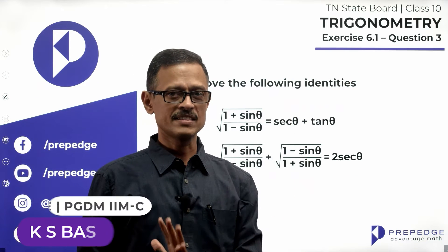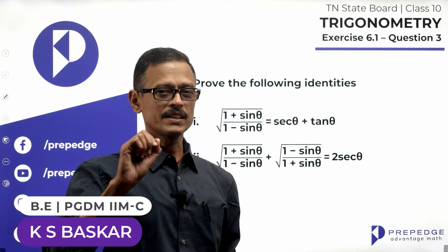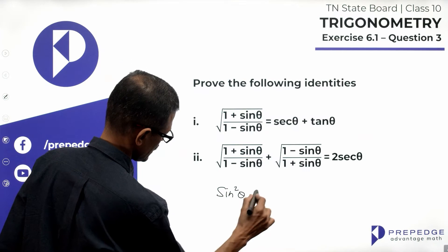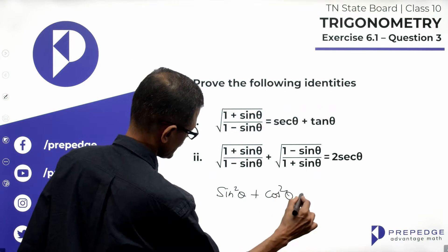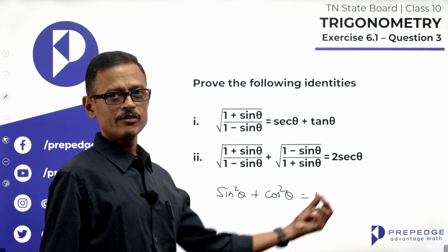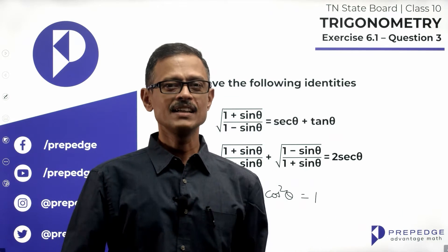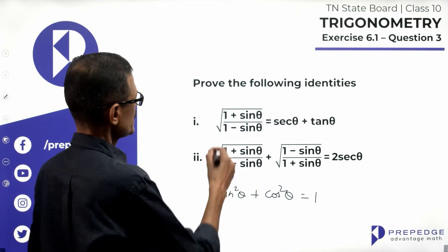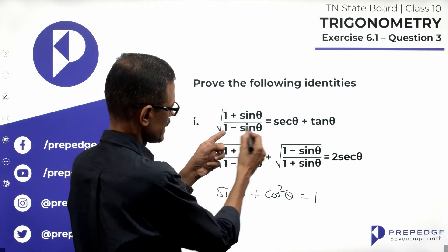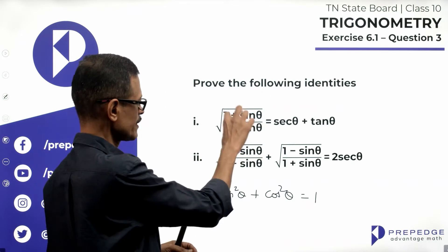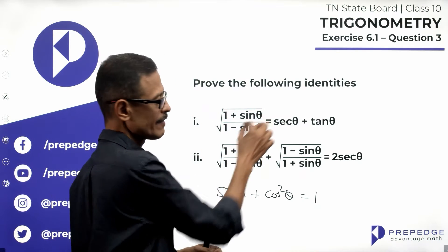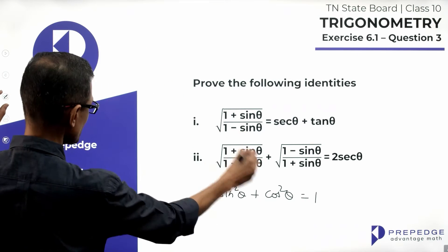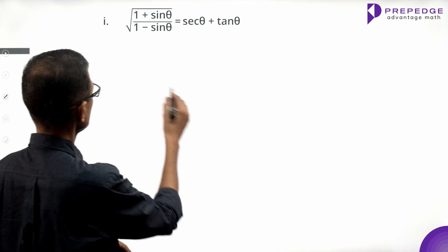Trigonometric chapter, section 6.1, question 3. We will use the trigonometric identity sin squared theta plus cos squared theta equals 1, or its modifications: 1 minus sin squared theta equals cos squared theta, and 1 minus cos squared theta equals sin squared theta. In the expression, the denominator is 1 minus sin theta, so we will multiply and divide by the conjugate, which is 1 plus sin theta.